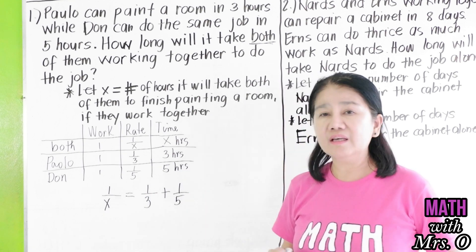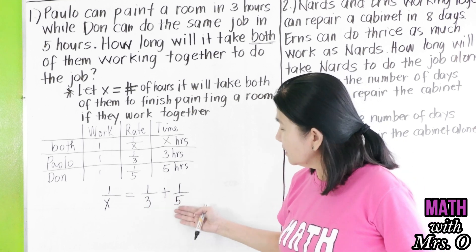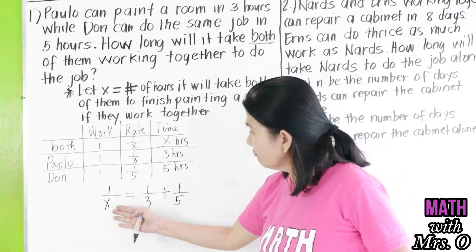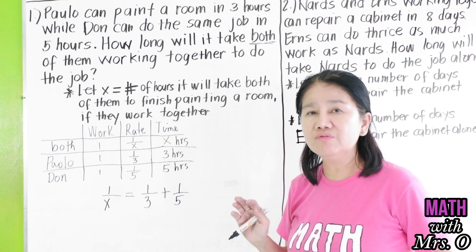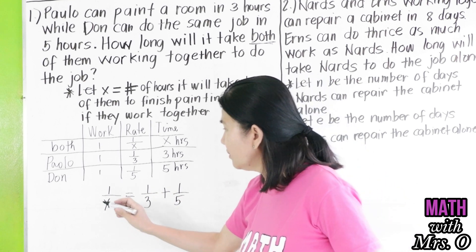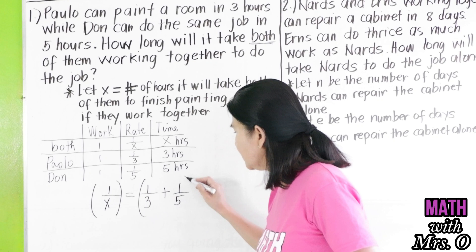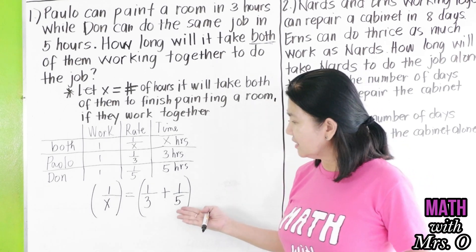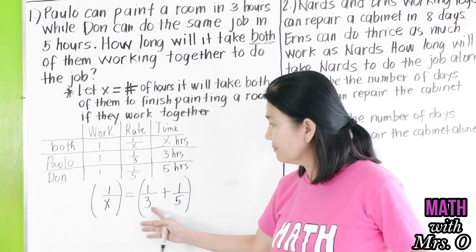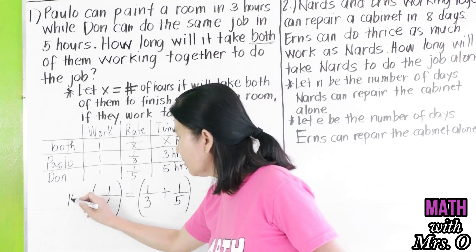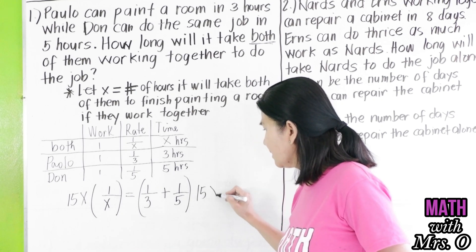There. Then we solve for X. If you have fractions like this, the best thing to do is to remove all the denominators. How do we do that? By multiplying everything by the LCD. What is the LCD here? Of three, five, and X. We have, yes, 15X. So we multiply everything by 15X.